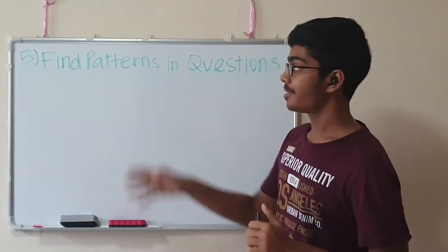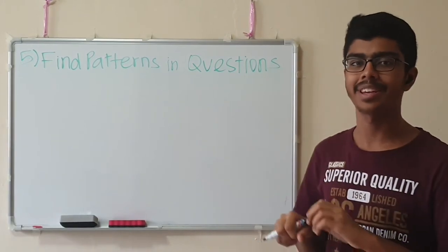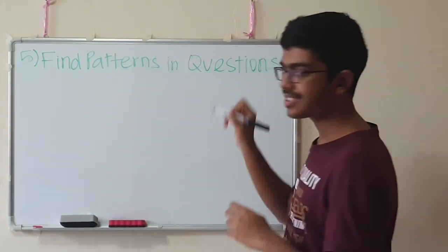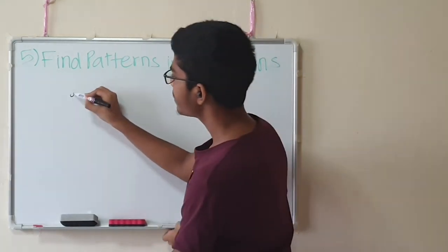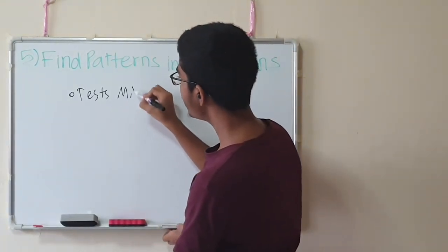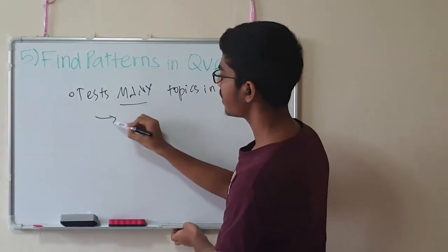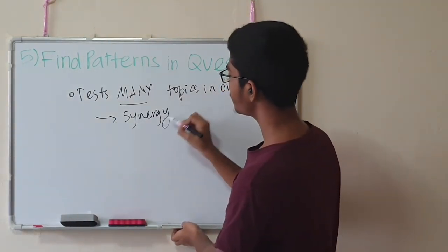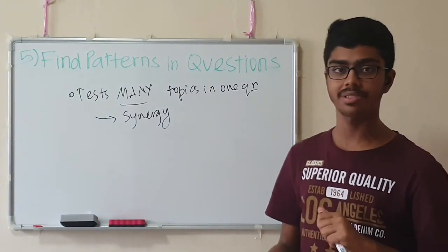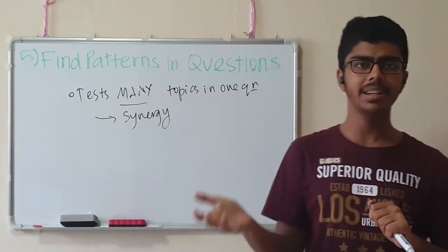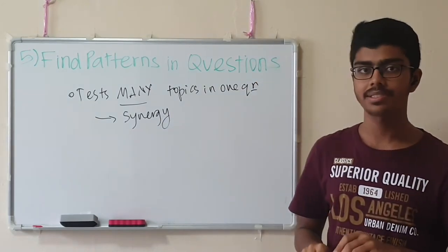The last and final strategy, the fifth strategy, is to find patterns in questions. For those of you who stick till this part of the video, you guys are probably going to score really well for chemistry. The chemistry syllabus, especially for A levels, tests many topics in one question. That's why you need synergy. What I mean by that—they test many different topics. For example, an energetics question can ask you about chemical bonding and atomic structure. An organic chemistry question can ask you about chemical bonding and equilibrium. It's important to understand the synergy between the different chapters.